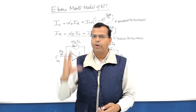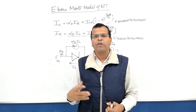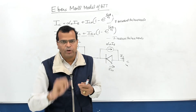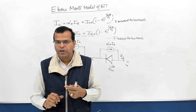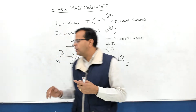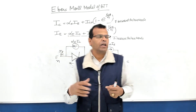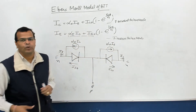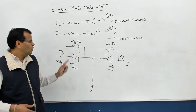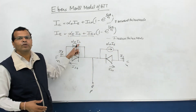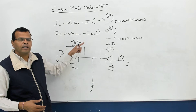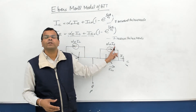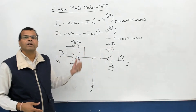The Ebers-Moll model is a two-diode model of BJT where we have two diodes carrying reverse saturation currents and two dependent current sources. On the emitter side, we have a dependent current source which depends on the collector current. On the collector side, we have a dependent current source which depends on the emitter current.